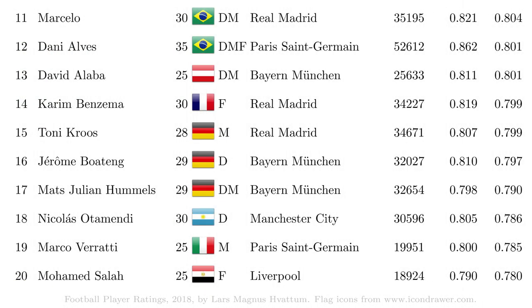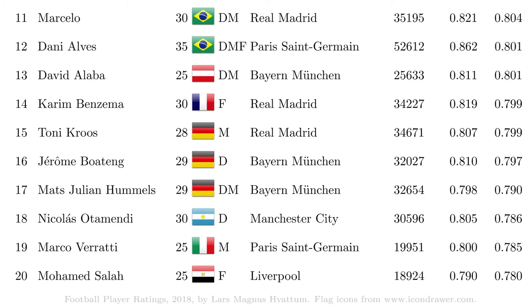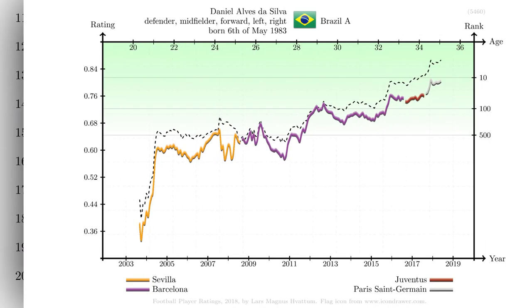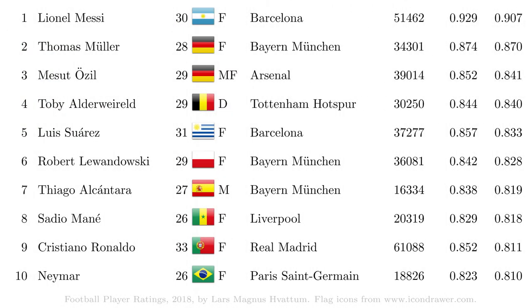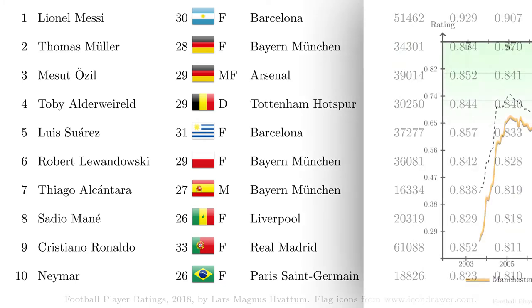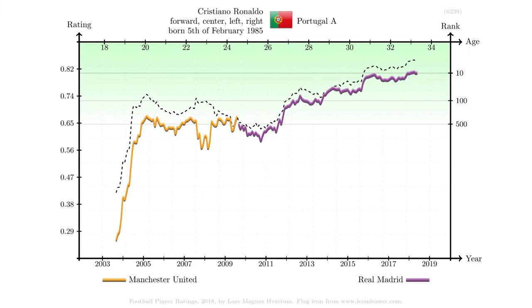There are no players in the list aged above 35 years old. Among those that were 35 years old in June 2018, Dani Alves at number 12 is the highest rated. Perhaps a bit surprising. At number 9 we find Cristiano Ronaldo. He is the player in the top 100 list that has recorded the most playing time in the database, with 61,000 minutes.